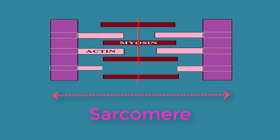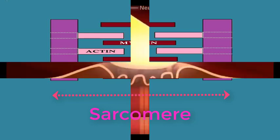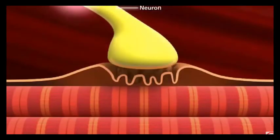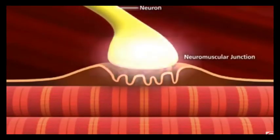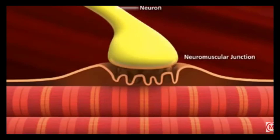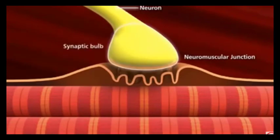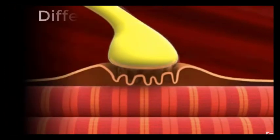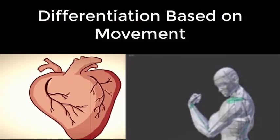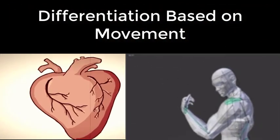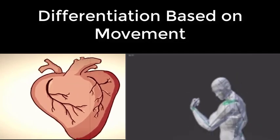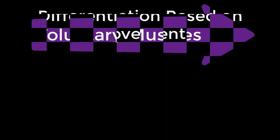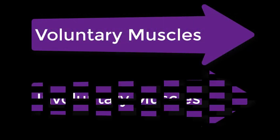A muscle cell's ability to contract or shorten itself permits movement. To activate it, the brain sends an impulse down a nerve. The nerve impulse travels down the nerve cells to the neuromuscular junction, where a nerve cell meets it. Muscles can also be classified into two different groups based on their movement: voluntary muscles and involuntary muscles.